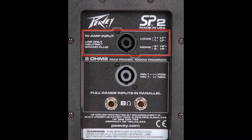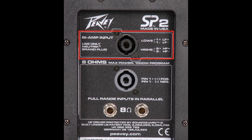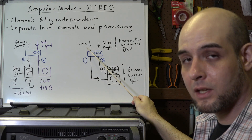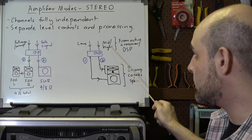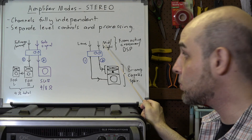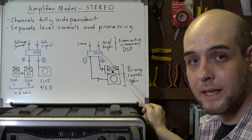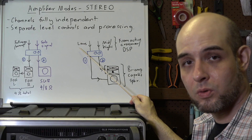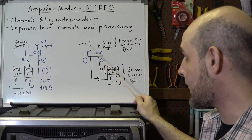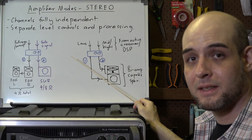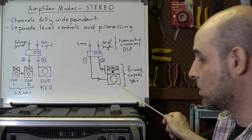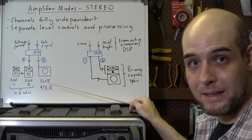A lot of stage monitors can also be run bi-amplified if you want maximum power output. Channel one would be fed a low signal and channel two a mid and high signal. To get these two signals you would need either an active crossover or a DSP — running a low pass filter for the lows and a high pass filter for the mids and highs. The exact crossover frequency depends on the design of your cabinet and its requirements.